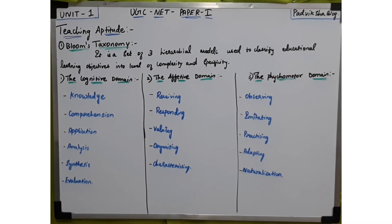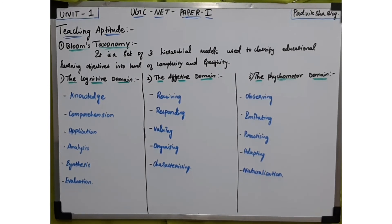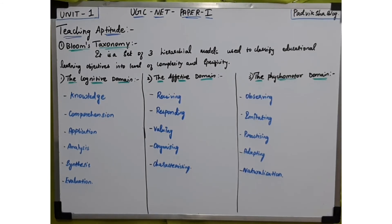The last category in the affective domain is characterisation — the ability to internalize values and let them control a person's behaviour. For example, a man marries a woman not for her looks but for who she is. We should not judge a book by its cover. Characterisation means that a person's character and features depend on their values, not their appearance.